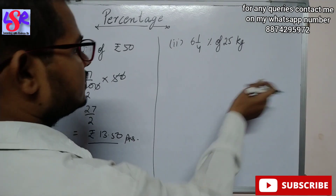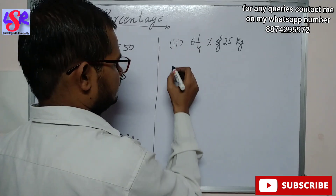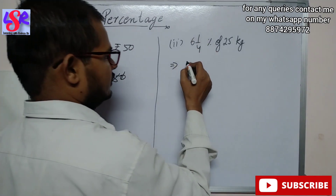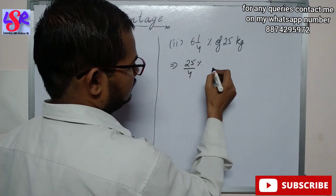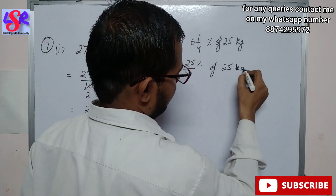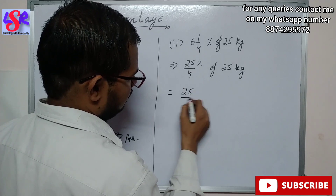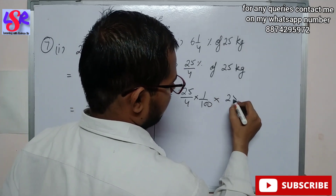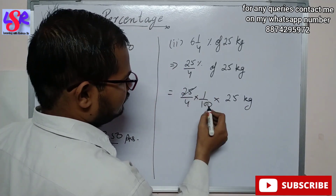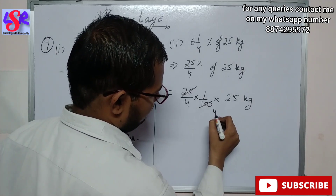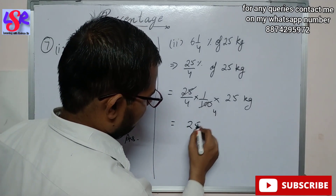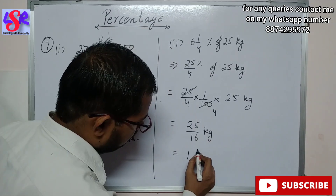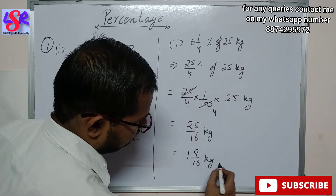Let us also see the second part: 6 whole 1/4 percent of 25 kg. Converting to improper form: 6 into 4 is 24, plus 1 is 25, giving 25 upon 4 percent. Removing the percent: 25 upon 4 into 1 upon 100 into 25 kg. The 25s cancel to give 25 upon 16 kg, which can be written as 1 whole 9/16 kg as the answer.